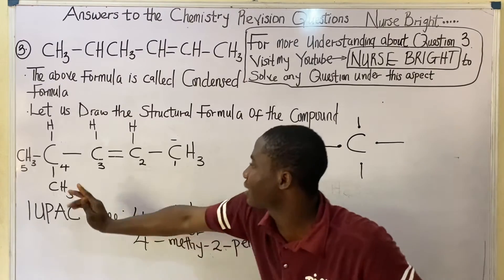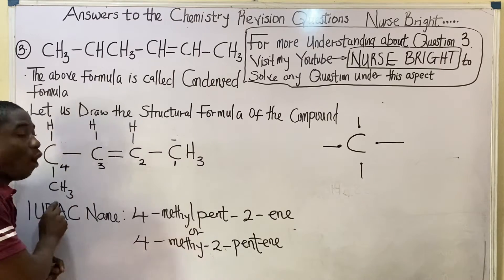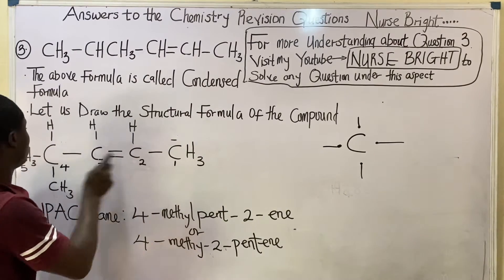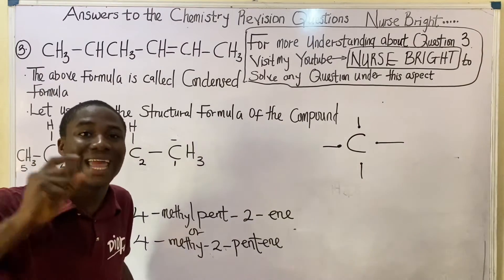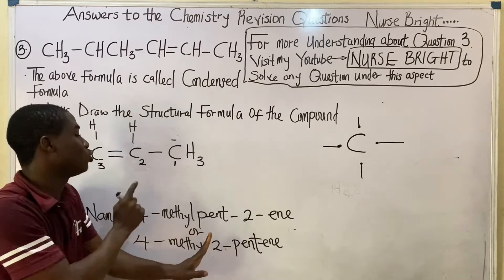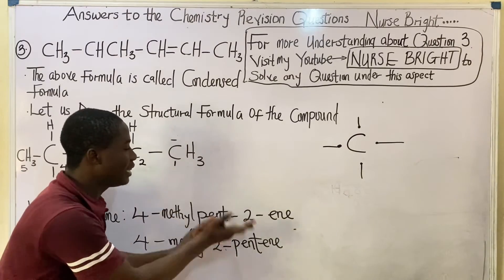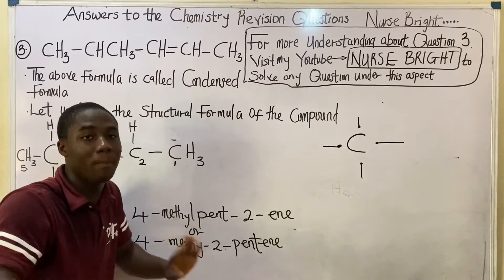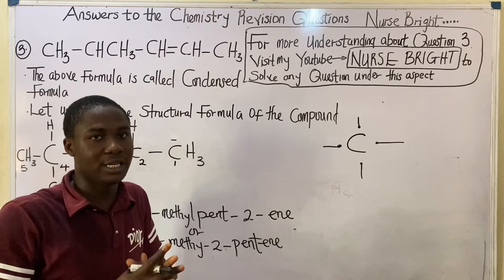Counting this way: at carbon two we have the double bond, which is an alkene functional group. At carbon four we have the methyl group. Counting the main chain gives us five carbons, so it is not pentane but pentene — an alkene. The compound is therefore named 4-methylpent-2-ene. You can also say 'two-pentene with a four-methyl group.' This is how organic compounds are named — practice and you will master it.